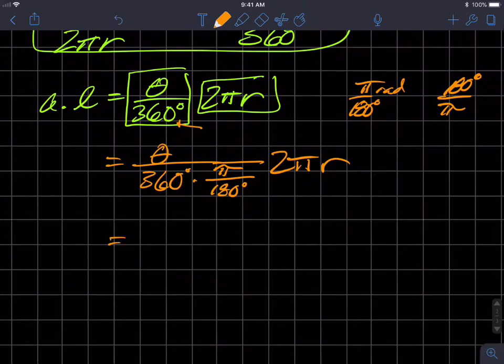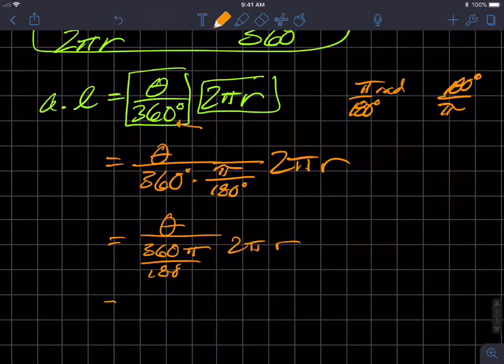And that 2πr is still out there. And so what that ends up giving us is θ over 360π over 180, 2πr, which then once I do this division, I get 2π.